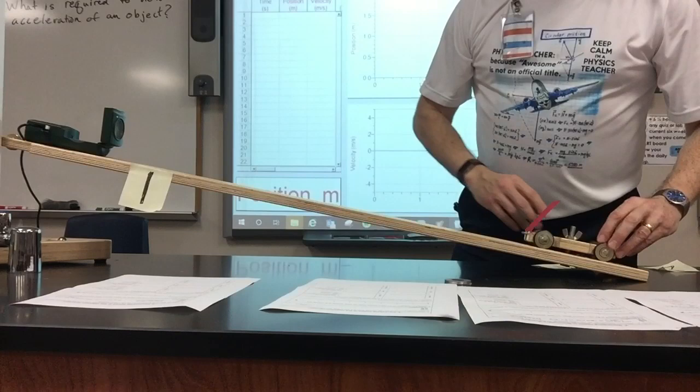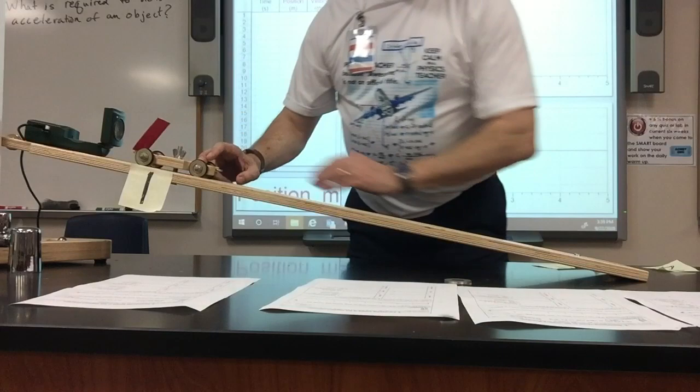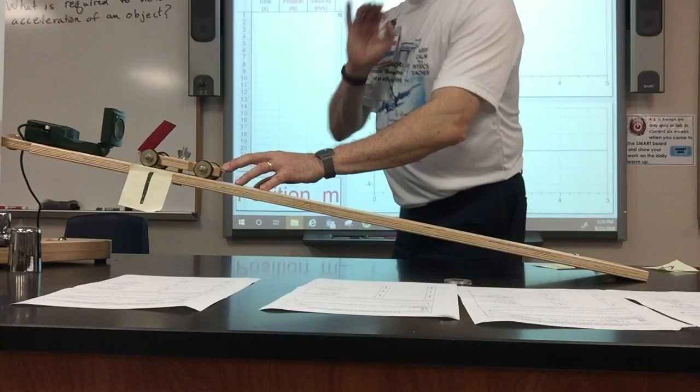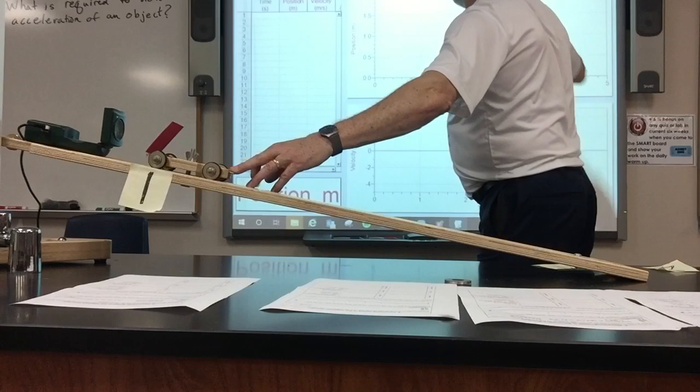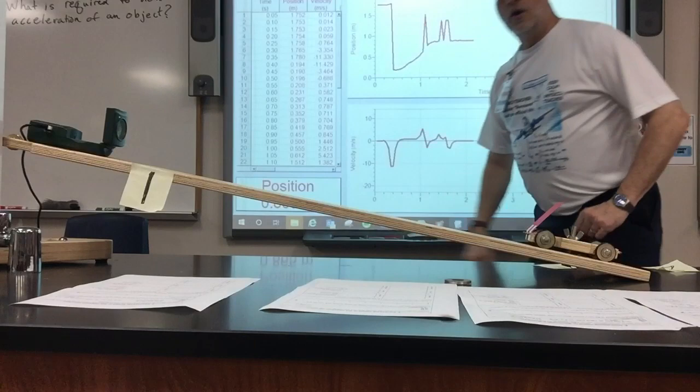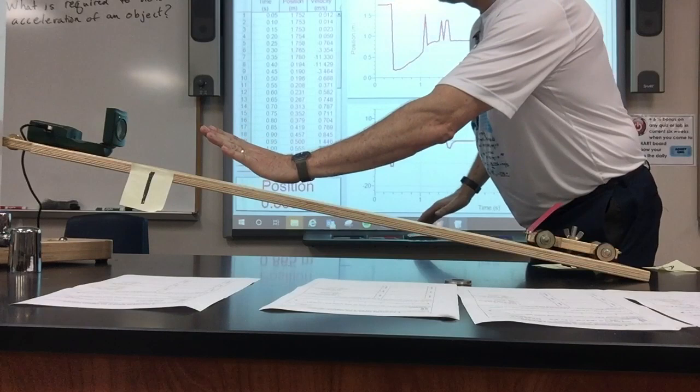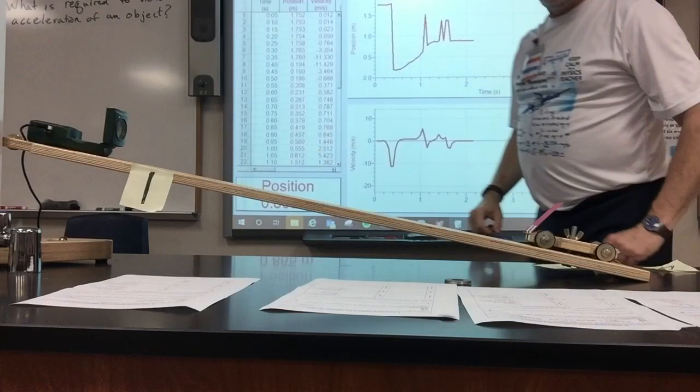Number one: without using the motion detector, observe what's happening. Put it up here and let it go. Predict what's happening. Pause the video, make your prediction, and now let's see what happens. Notice what happens here — observe how I held it up for a little second, and then all of a sudden it went down. That's number one.